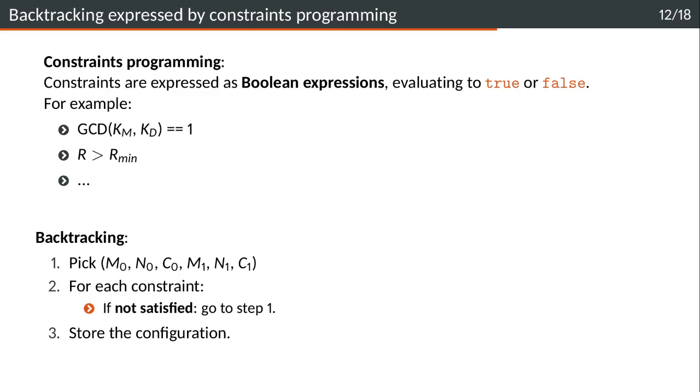The method that we propose here is called backtracking. Backtracking is a method used in the context of constraint programming. Constraint programming is a way to program in which constraints are expressed as Boolean expressions that evaluate to true or false. For instance, the constraints that we will write down here are the ones I mentioned before, such as GCD of KM and KD equals to 1, or the minimum throughput. We will write down all those constraints and then we will solve it by backtracking.